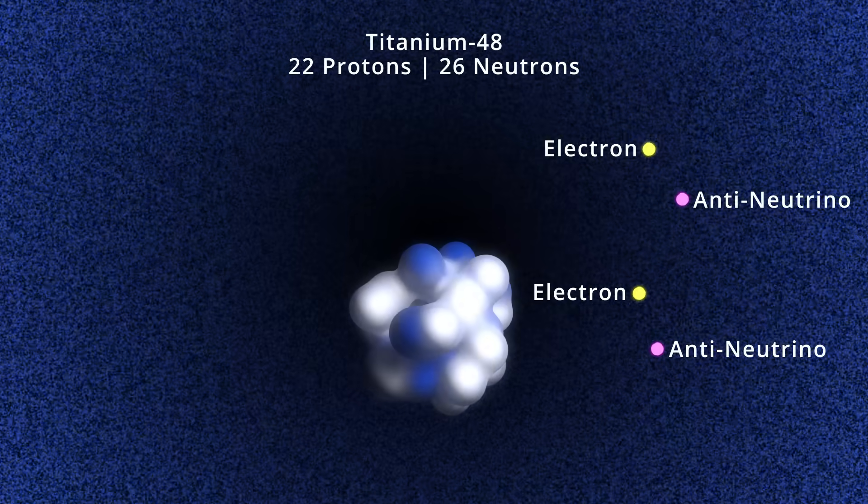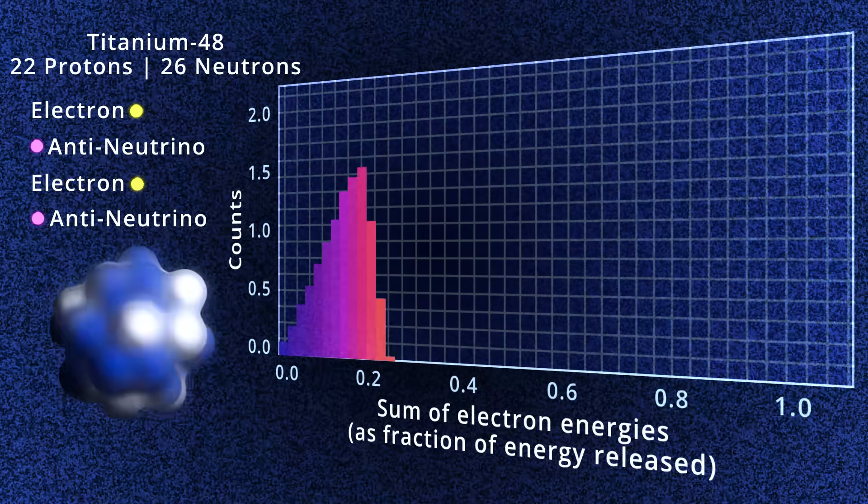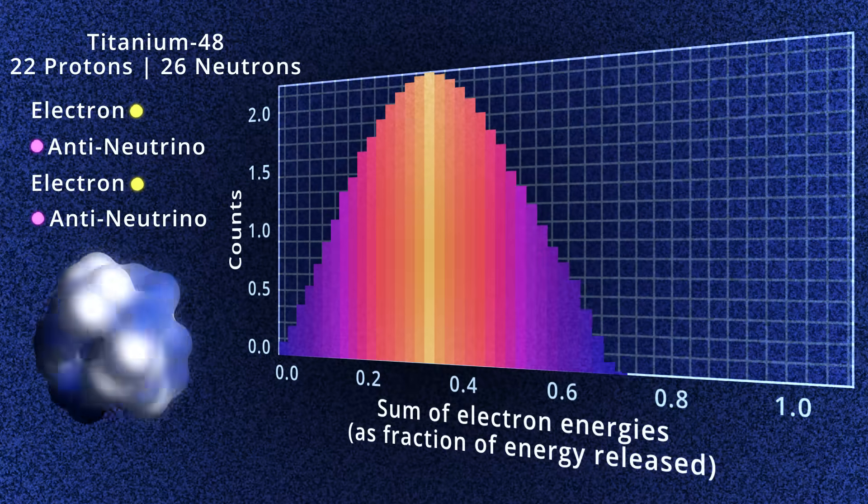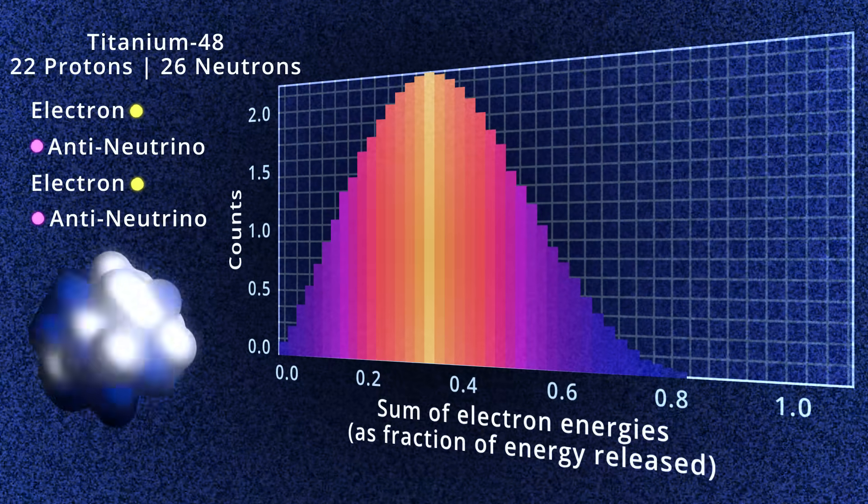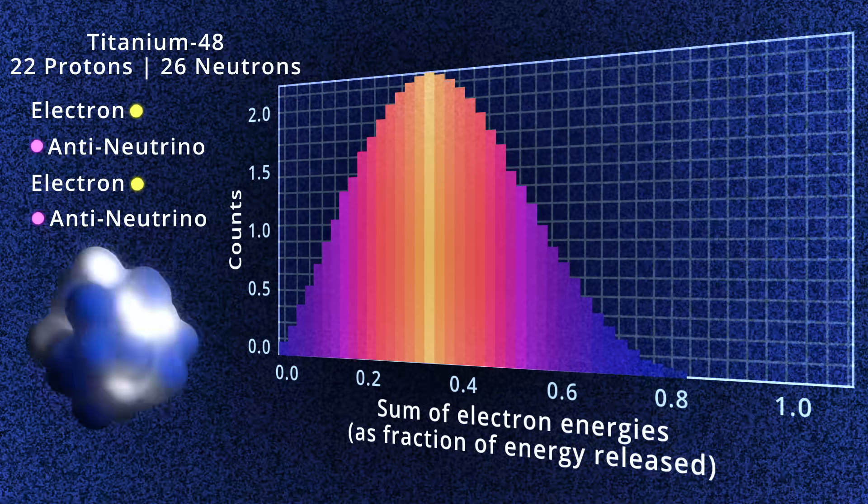Here, the sum of two electrons will give a continuous energy spectrum as energy is carried away by the unmeasured antineutrinos.